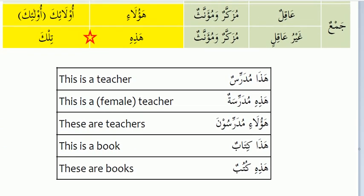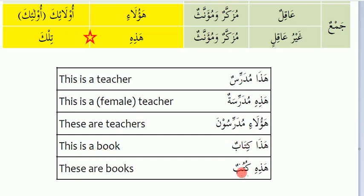Now the examples: Haaza Mudarrisun — this is a teacher. Teacher is aaqil and masculine noun, that's why we use Haaza. Haazihi Mudarrisatun — this has a ta marbuta, meaning it is feminine noun, so we use Haazihi for a female teacher. Haulai Mudarrisuna — these are the teachers. Haaza Kitabun — this is a book. Haazihi Kutbun — these are the books.